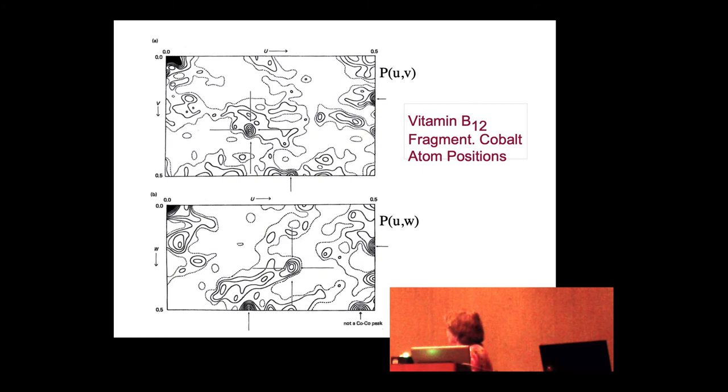And I went to do graduate work with Dorothy Hodgkin. And we got a fragment of vitamin B12, which has a cobalt atom in it. Nothing much else known about it. The organic chemists in Cambridge were having a very hard time making products to try and guess what the chemical formula was.